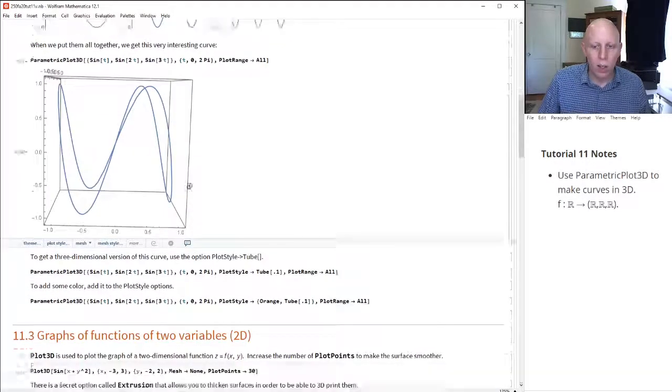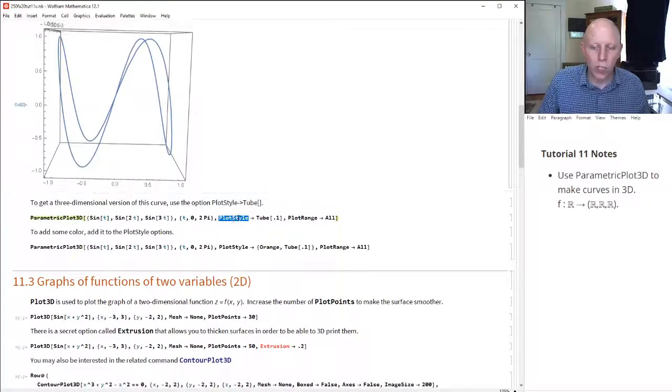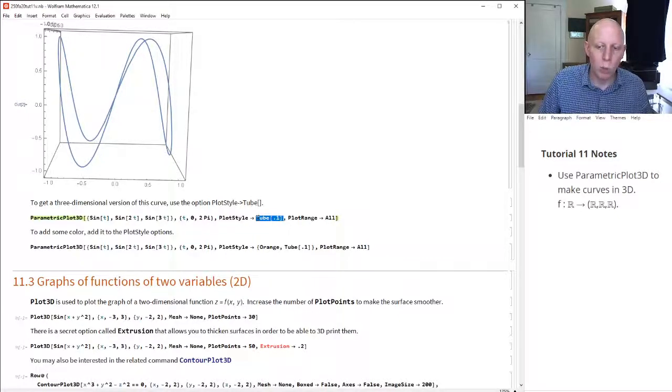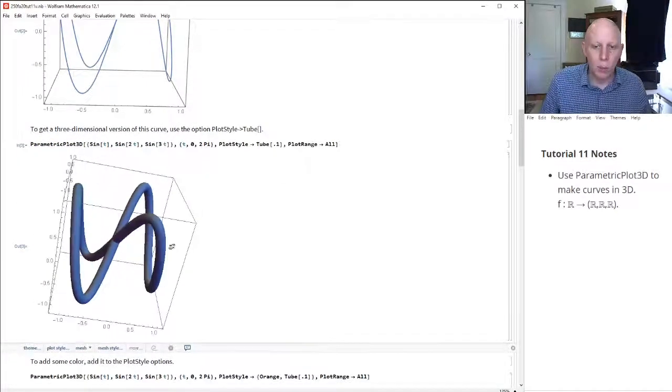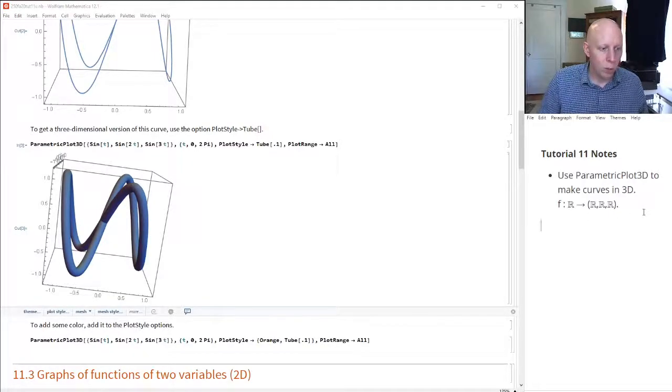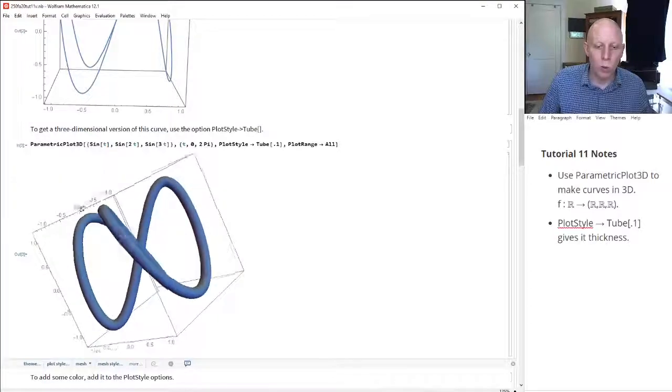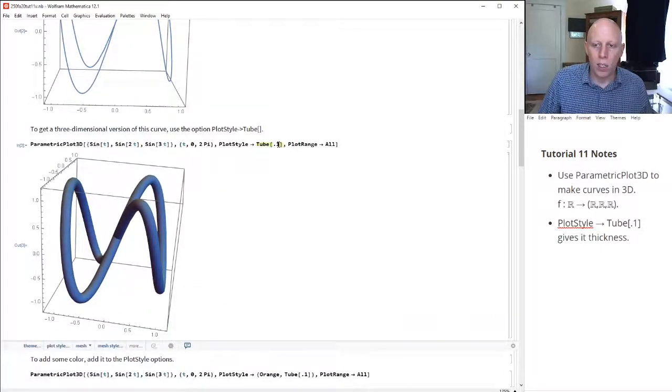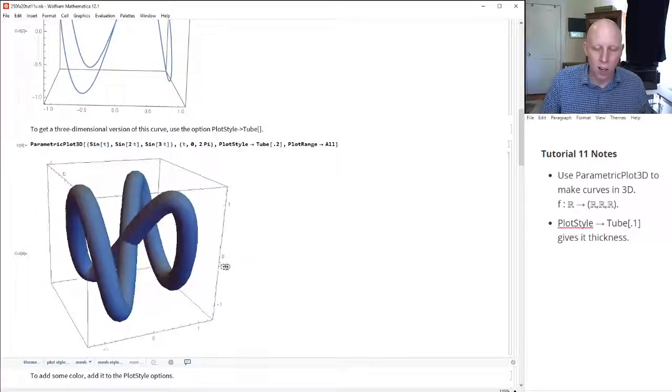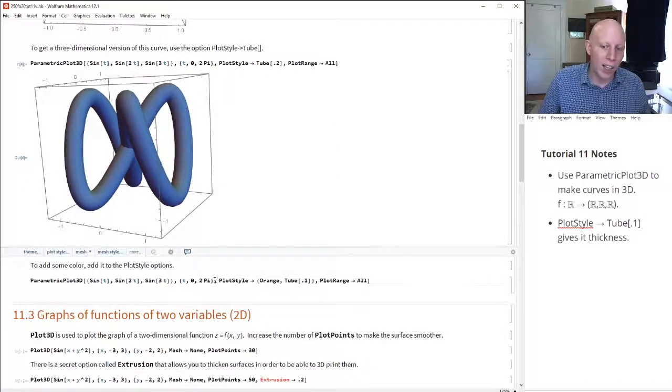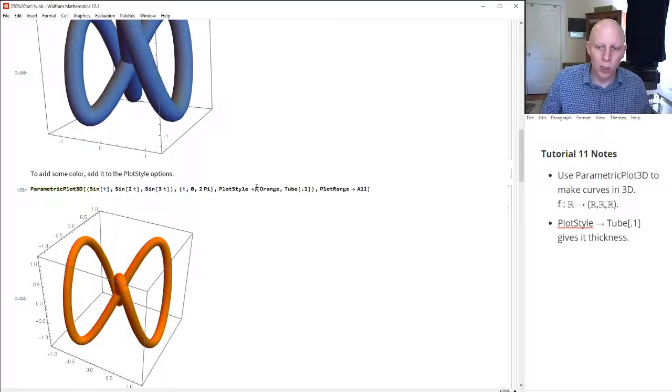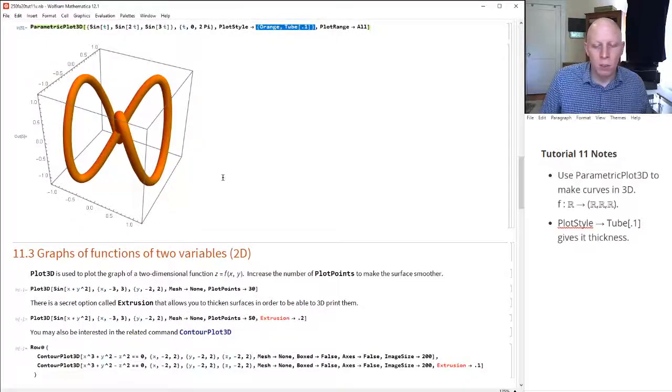So to give it some thickness, we use this technique where we change the plot style. Instead of normally, when we think of plot style, what it does is it adds some color or other characteristics to your graph. But in this instance, what we're doing is we're using tube as the option for plot style. And so when we set plot style to be equal to a tube, then that gives us some thickness and we would then be able to export and 3D print this curve. And by changing what the thickness is, you get different thicknesses of your curve. You can also decide to add some color to the plot style by including that in a list.